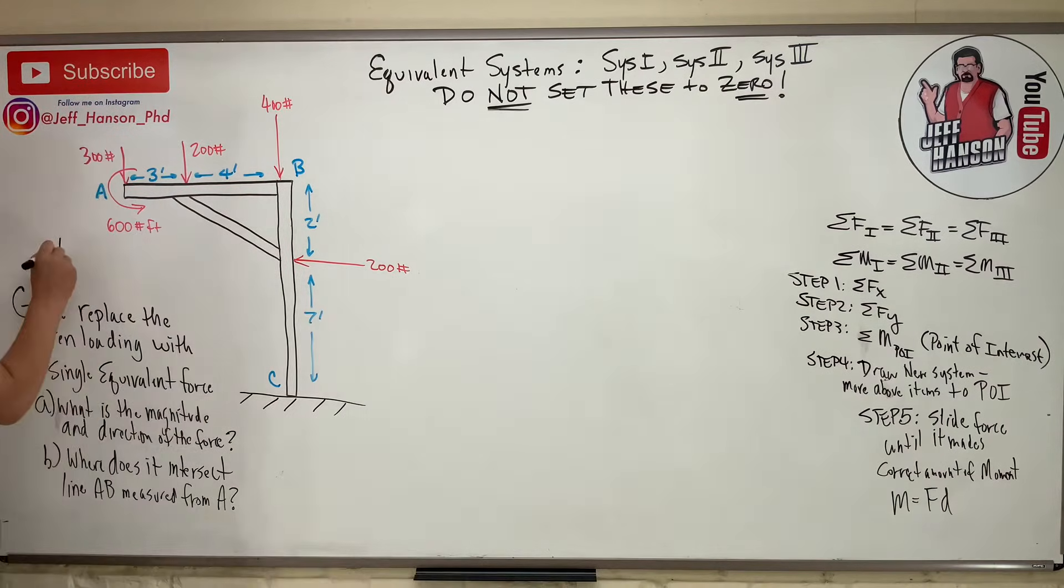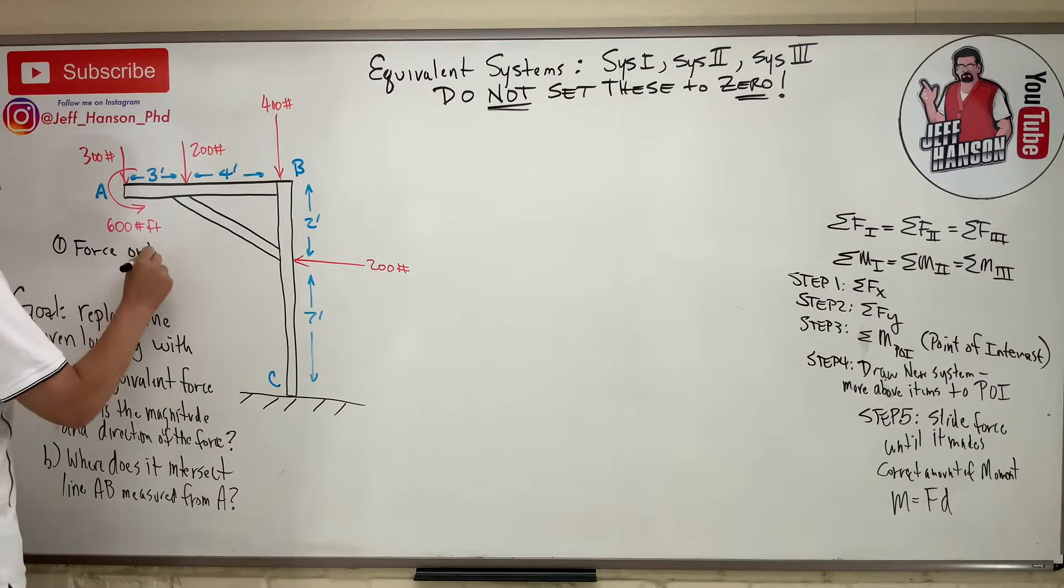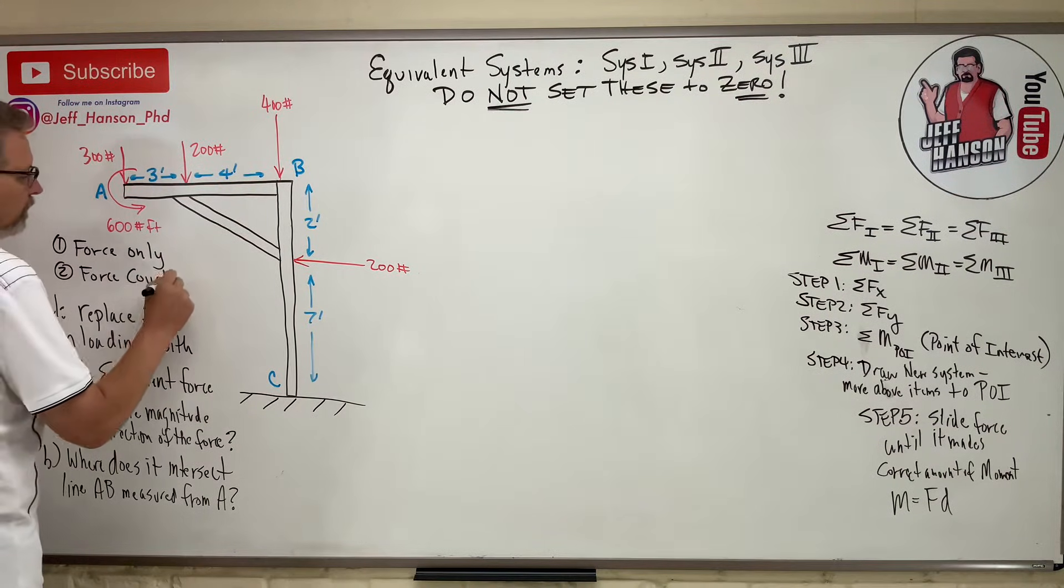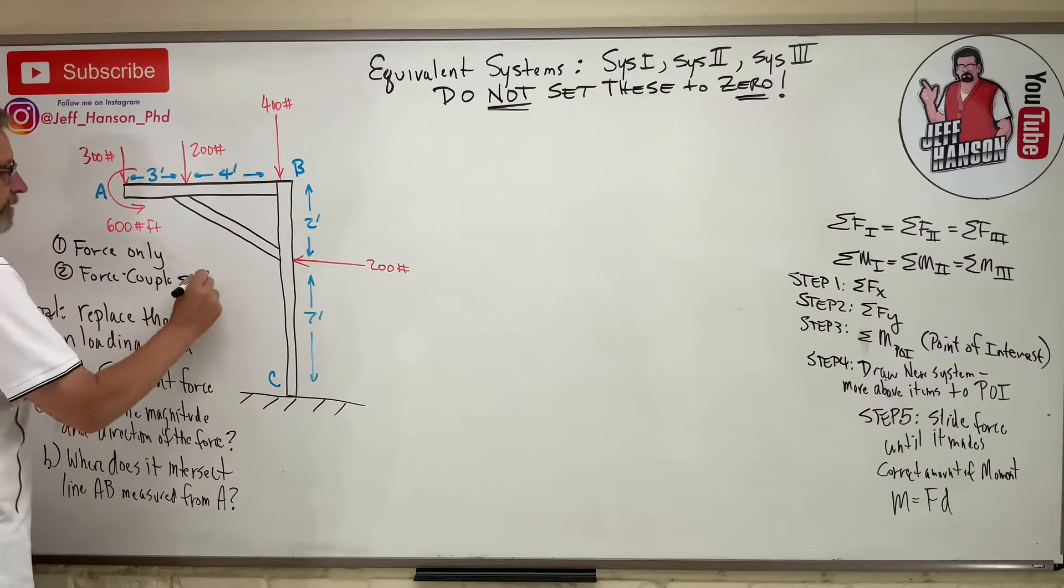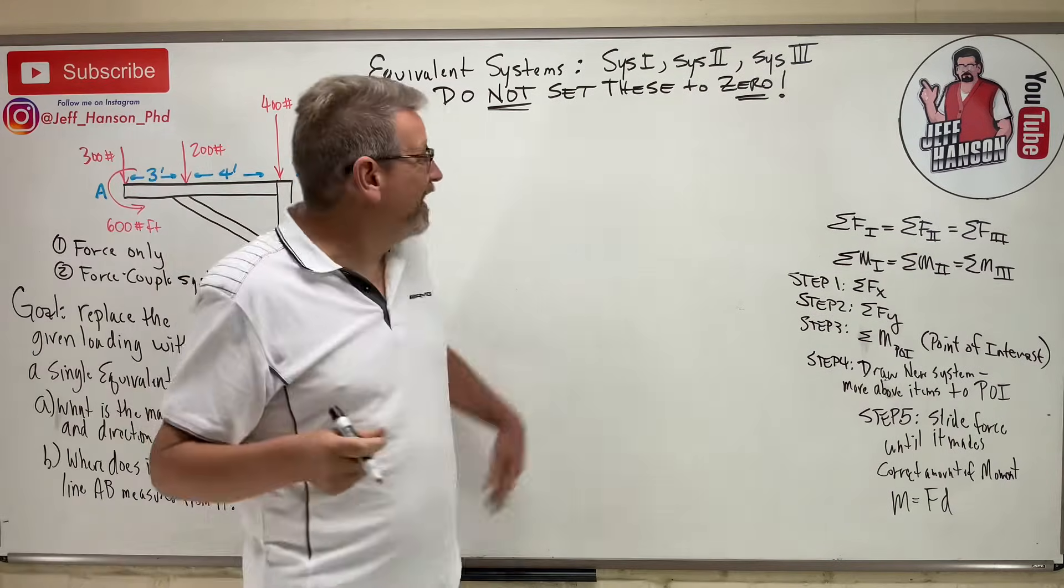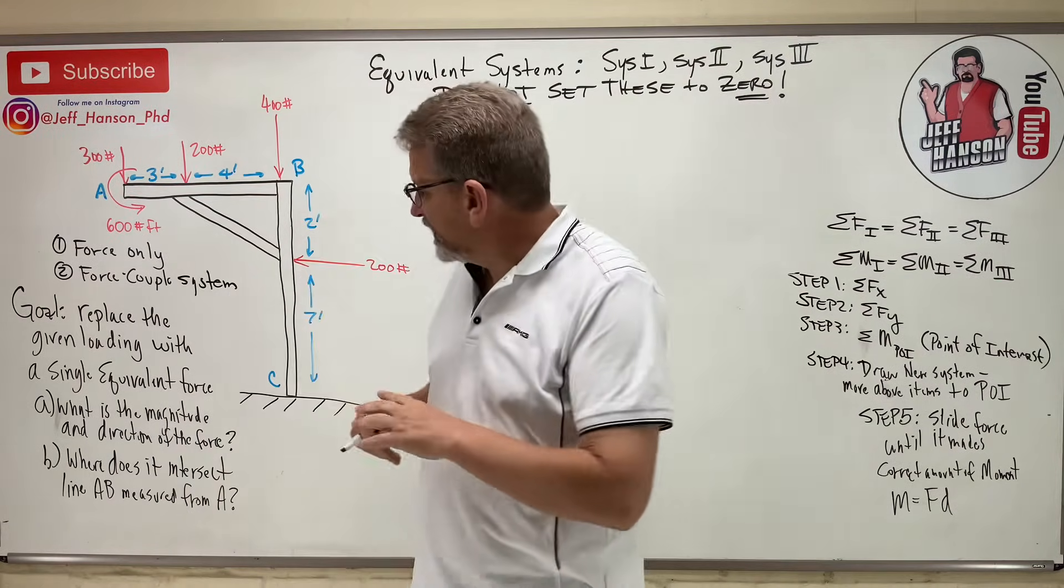Number one, are they asking me for a force only system? Or number two, are they asking me for a force couple system? You need to read the question to determine what you have. Am I going to have a system 1, 2, or a system 1, 2, 3? Let's see what it says.